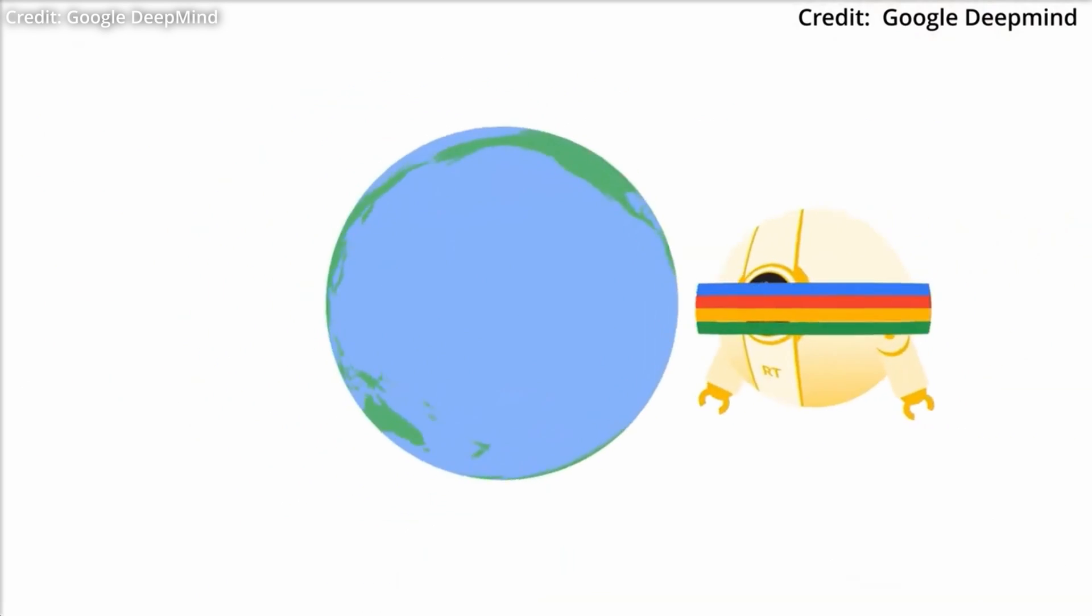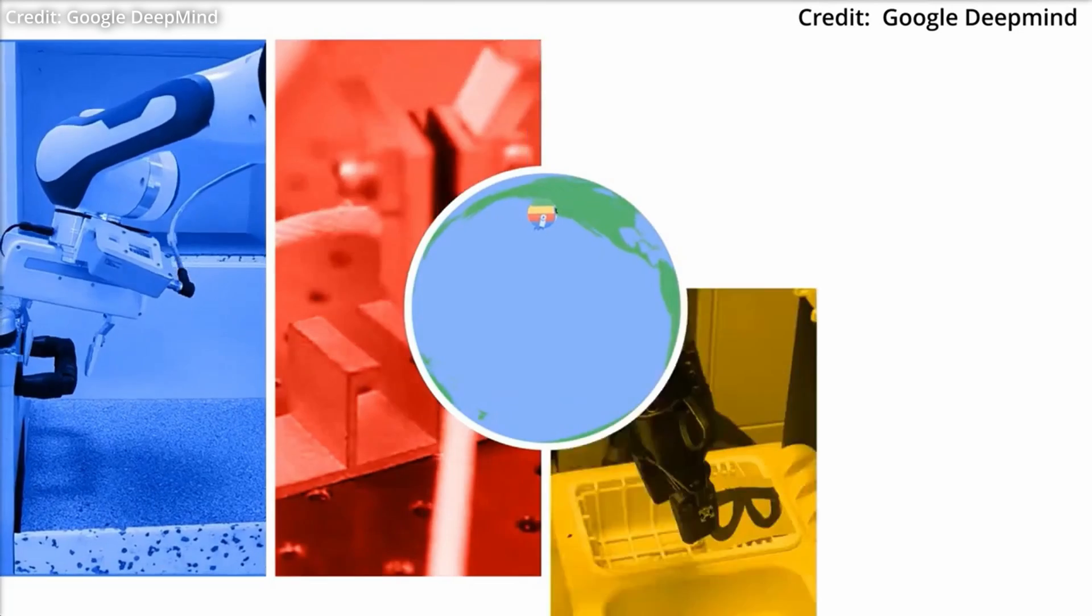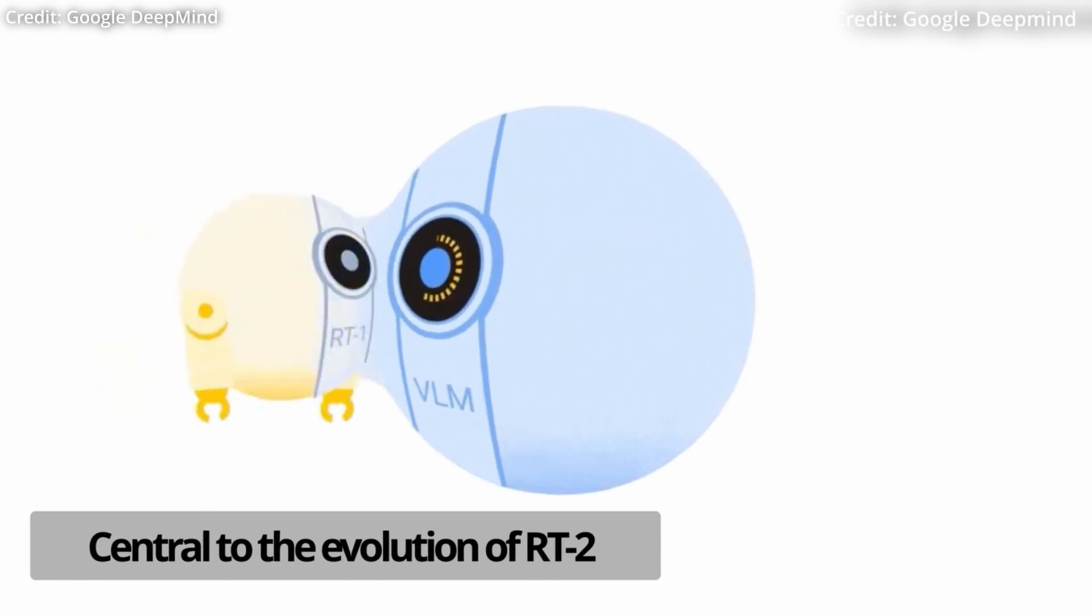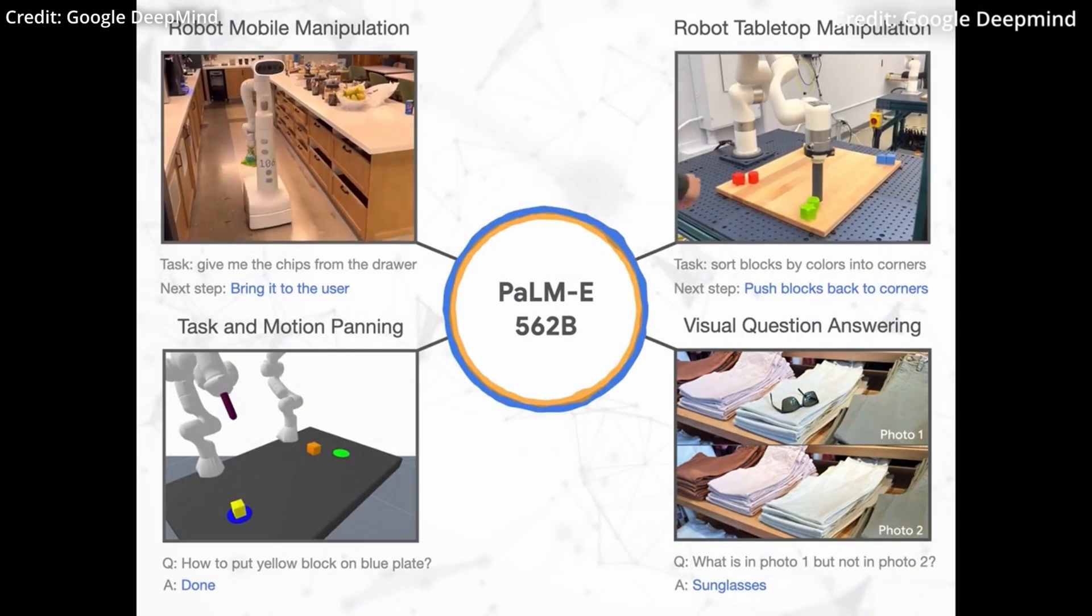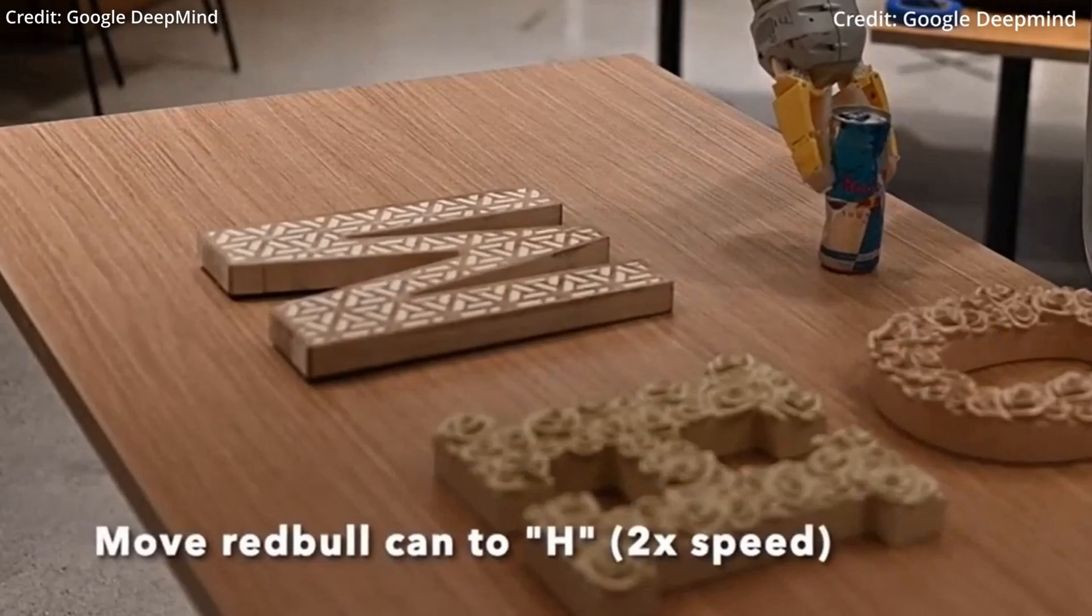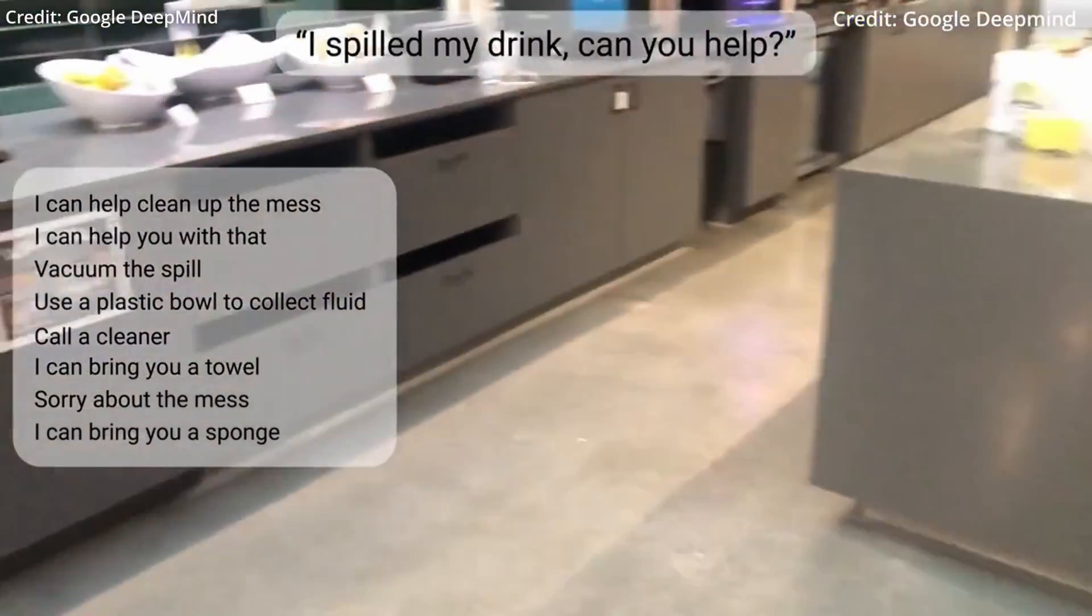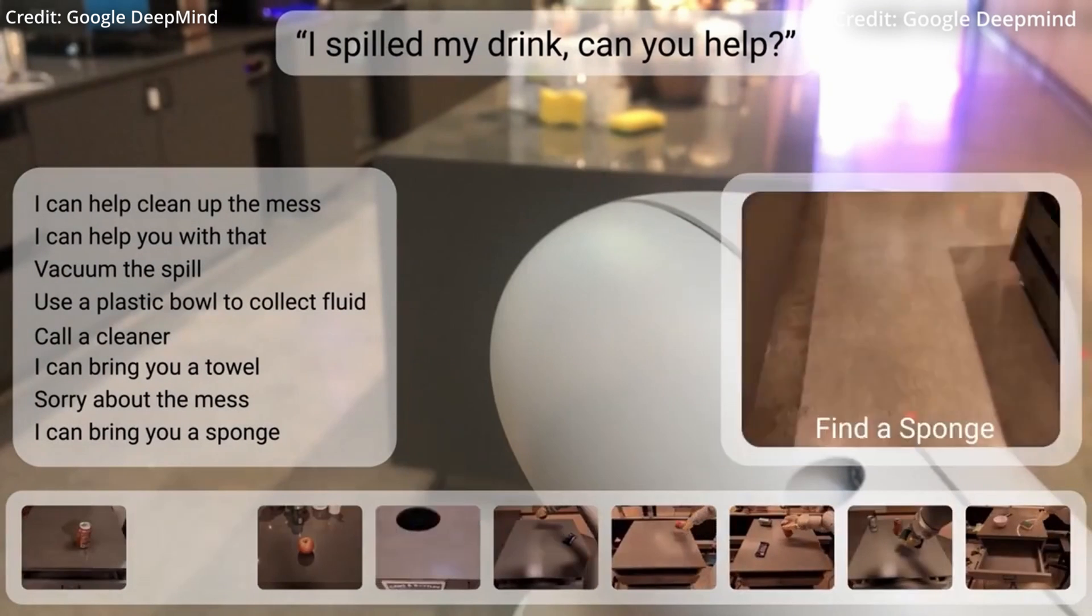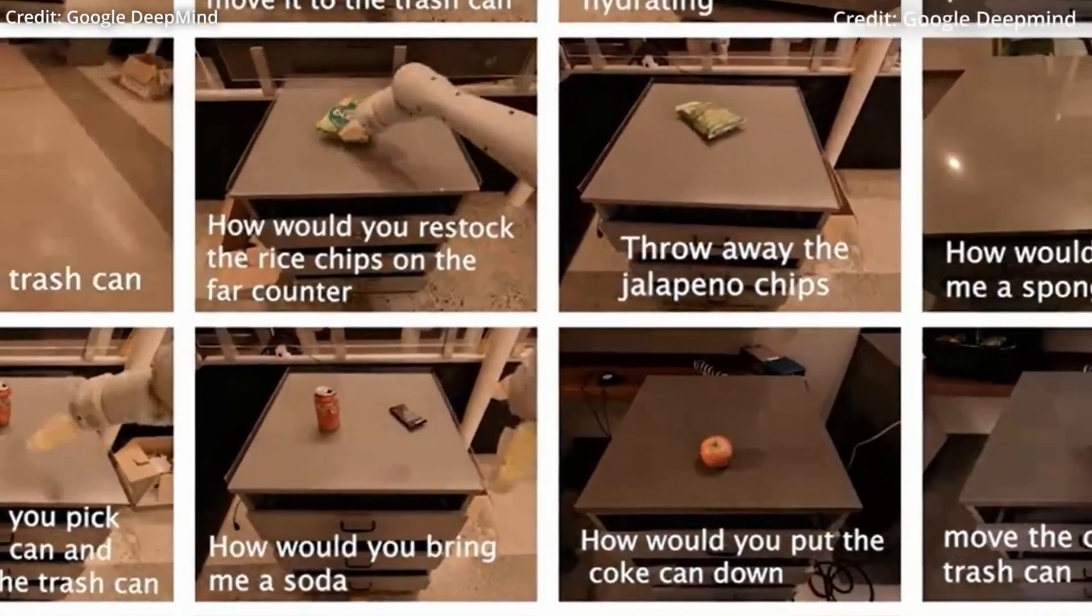This all means that in the very near future, the integration of these models and systems is about to bring a wave of more efficient and capable robots. For example, robots will be able to combine the motion generalization capabilities of RT Trajectory, the efficiency of SARRT, and the extensive data collection potential of AutoRT. Google DeepMind envisions this integration as a stepping stone towards building robots that are not only more efficient but also generalizable across diverse settings.